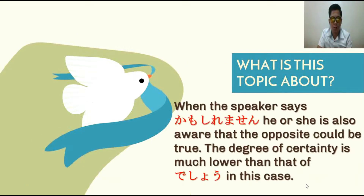When the speaker says Kamo Shirimasen, he or she is also aware that the opposite could be true. Ibig sabihin, kung gagamitin natin si Kamo Shirimasen, dapat aware din tayo na pwedeng hindi din mangyari yung posibleng mangyari.